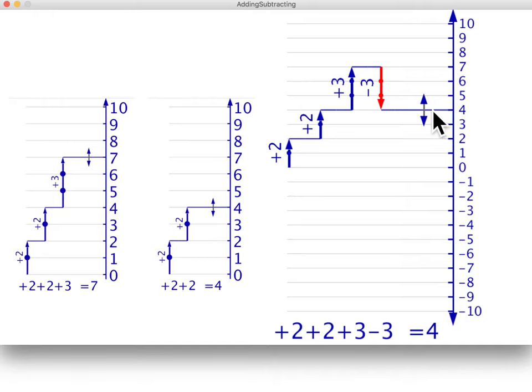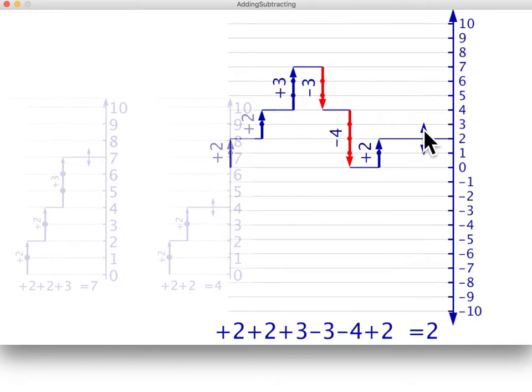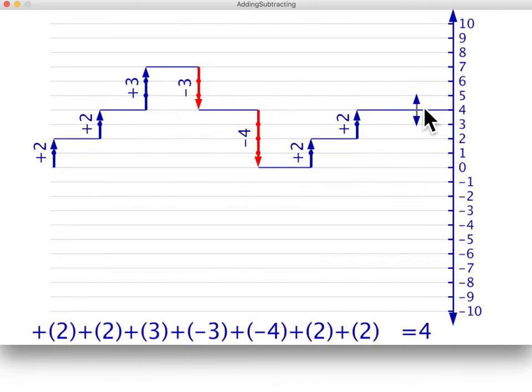This means that we can express any combination of upward and downward steps as the sum of steps rather than using a combination of addition and subtraction.